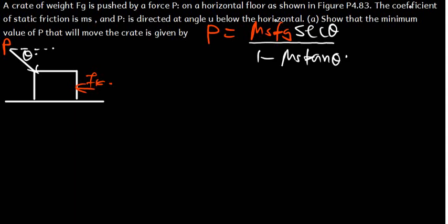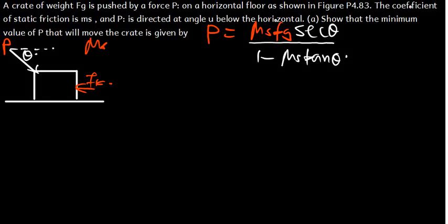In this video, let's see how we can solve this question, which is under Newton's laws of motion. The question says a block of weight Fg is pushed by a force P on a horizontal floor as shown in the figure. The coefficient of static friction is mu_S, and P is directed at an angle theta below the horizontal. Part A is saying: show that the minimum value of P that will move the block is given by this formula.